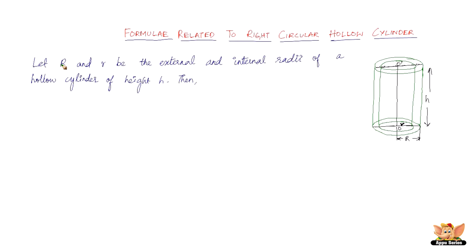Let capital R and small r be the external and the internal radii of a hollow cylinder of height h. The bigger circle has got the radius capital R and the smaller circle has got the radius small r. And we've got the height h. So this is a hollow cylinder.